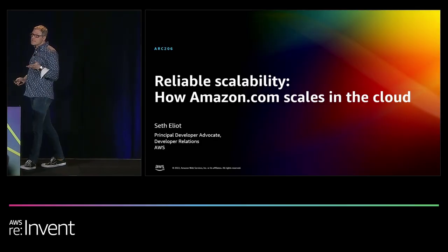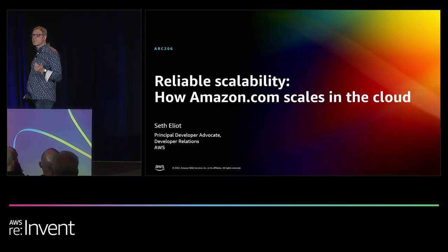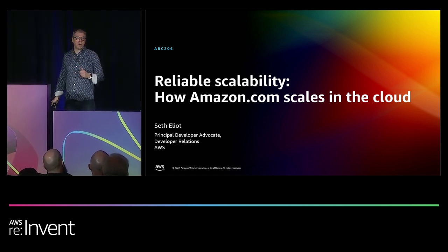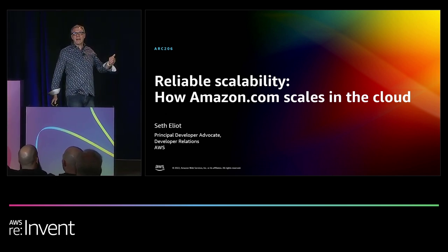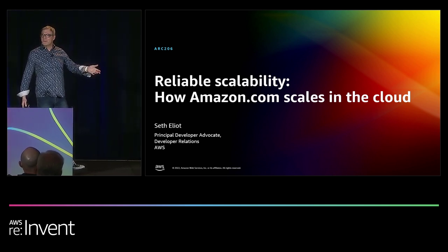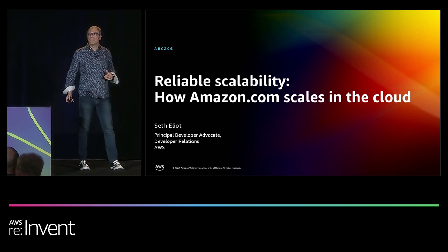My name is Seth Elliott. I am currently a principal developer advocate for developer relations — that's a recent change for me. Prior to that, I was the reliability lead for AWS Well-Architected, which is going to play a big part in the talk today. But even before that, I actually worked for Amazon.com. I joined Amazon back in 2005 and was working on the .com side before moving to AWS.